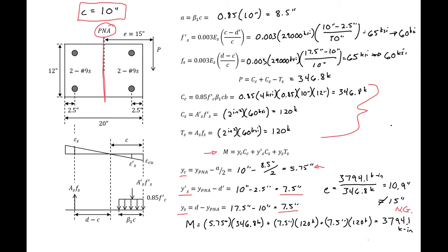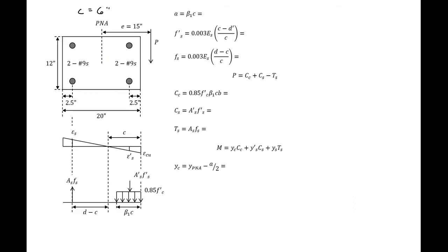Since our axial load P is too large relative to M, leading to a lower eccentricity, we need to reduce our c for the next guess. The next guess we're going to make is c equal to 6 inches.